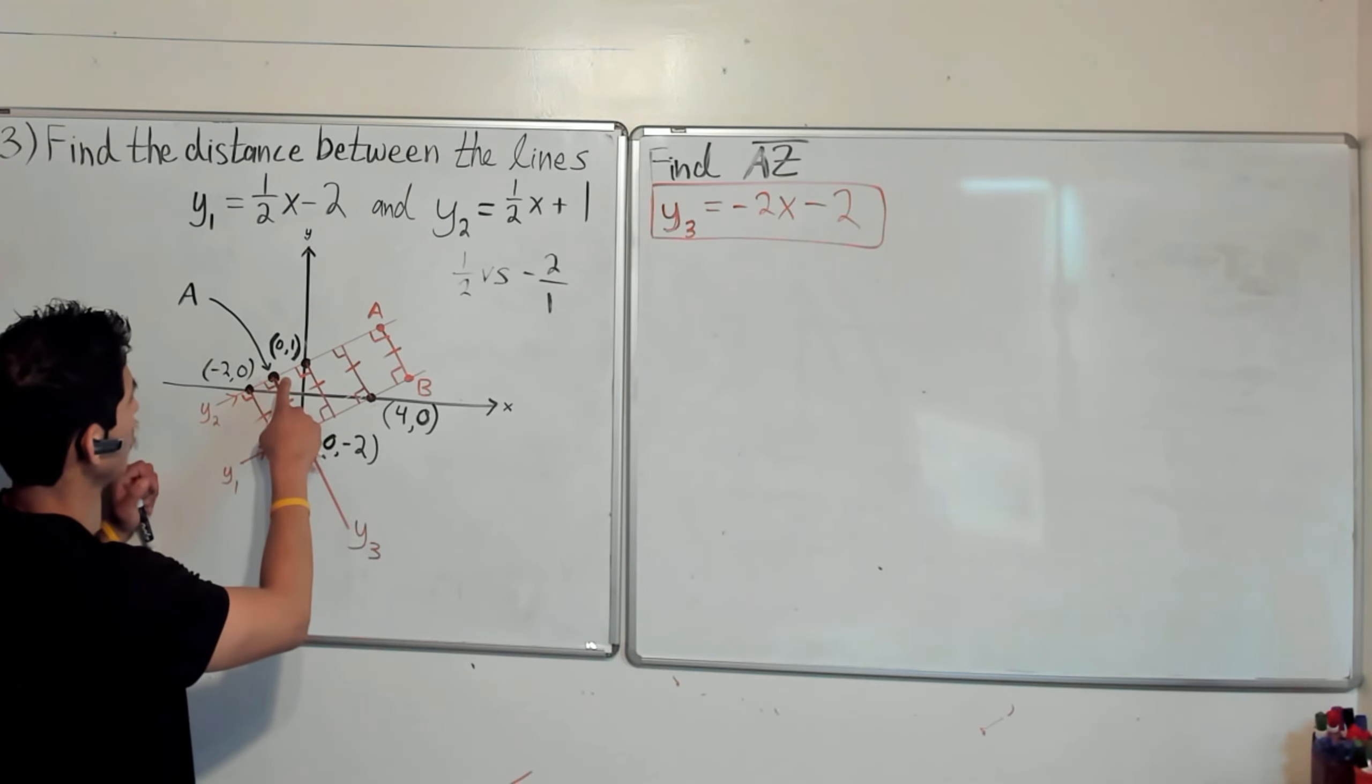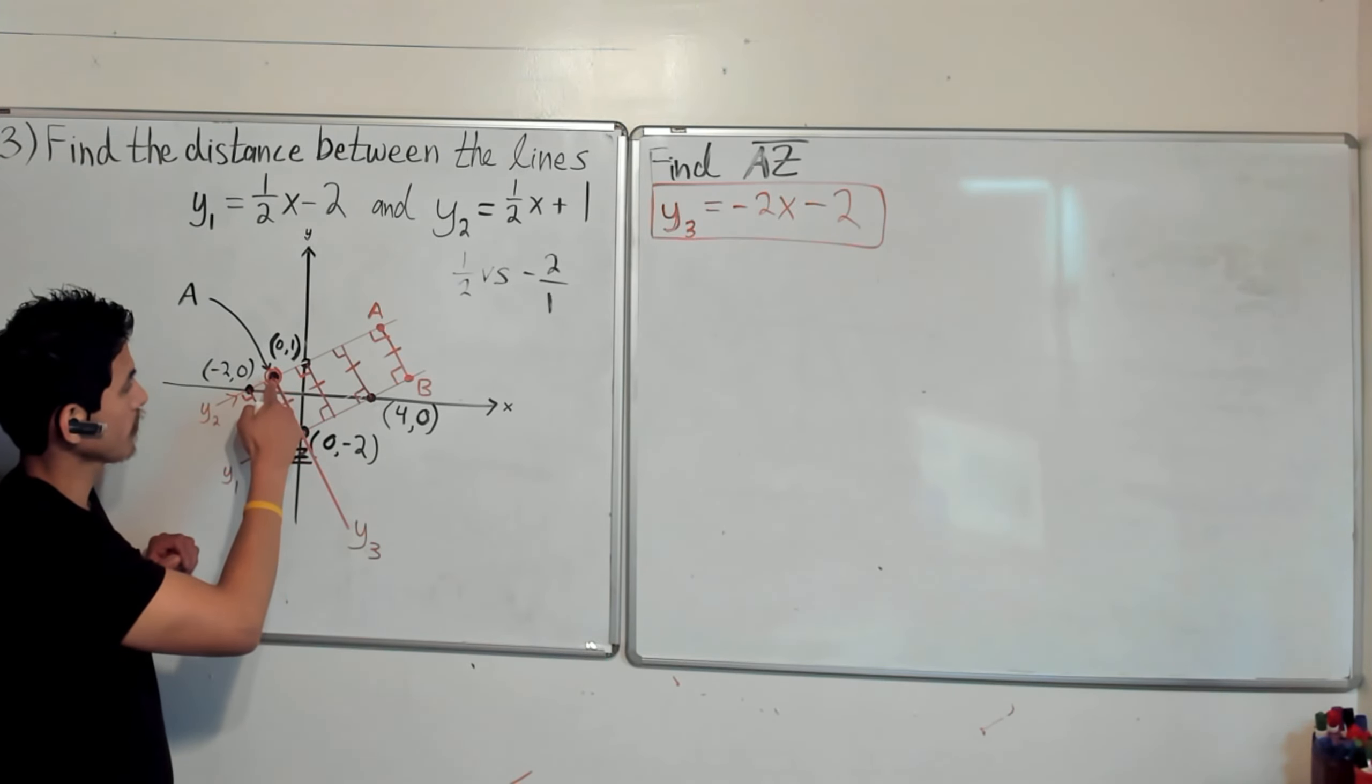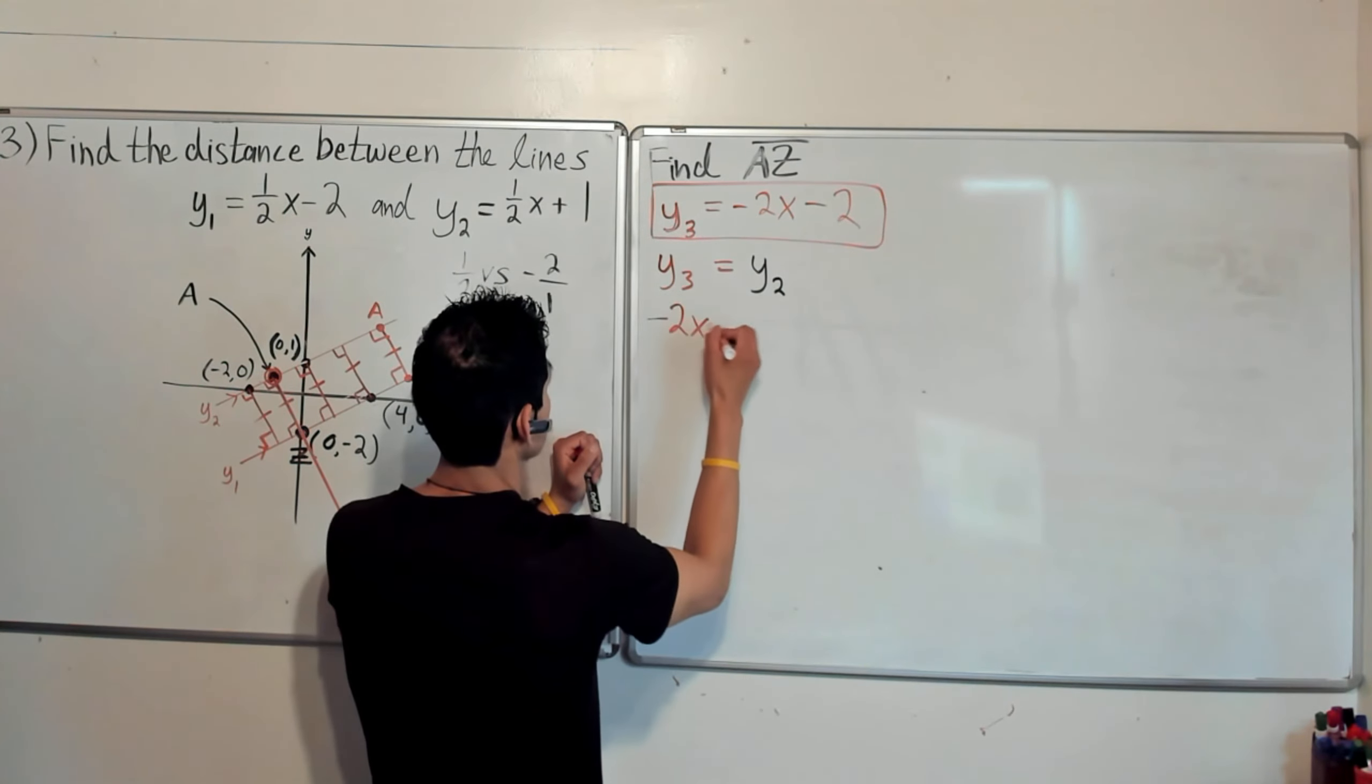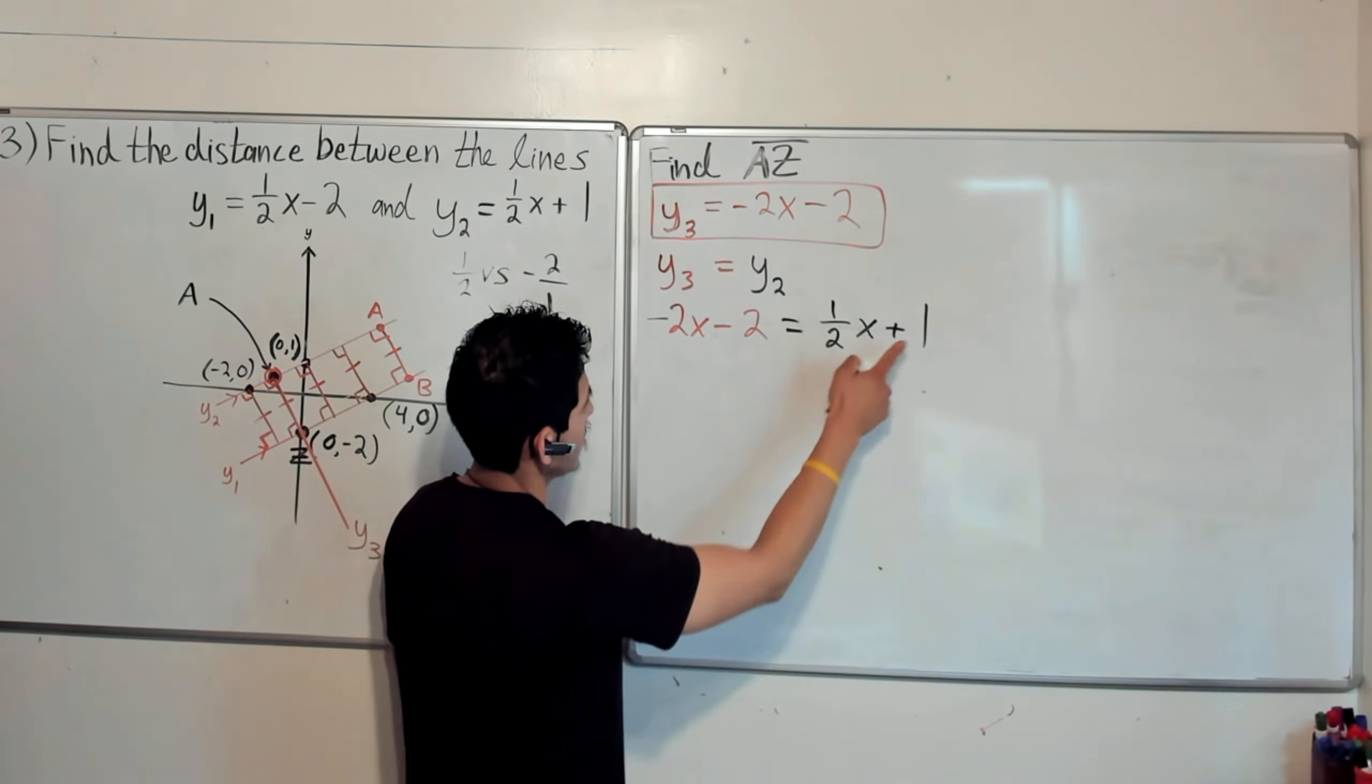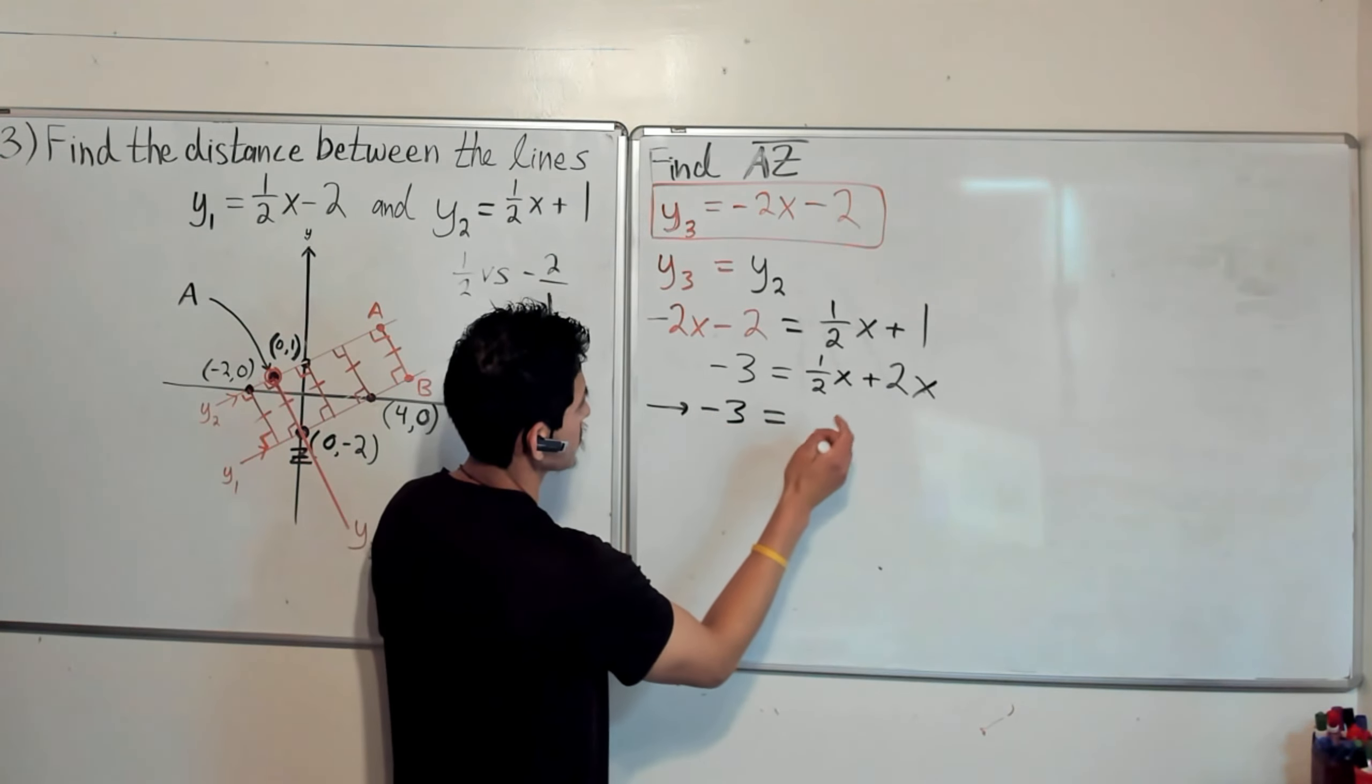Now, we need to find where point A is at. And to find where point A is at, we set y3 equal to y2, because this point is where y2 and y3 intersect. This is the point of intersection. And so we just go ahead and set y3 equal to y2. We have -2x - 2 = 1/2x + 1. Make sure you know your fractions. Let's add 2x to this side and take away 1. So we're going to have -3 = 1/2x + 2x.